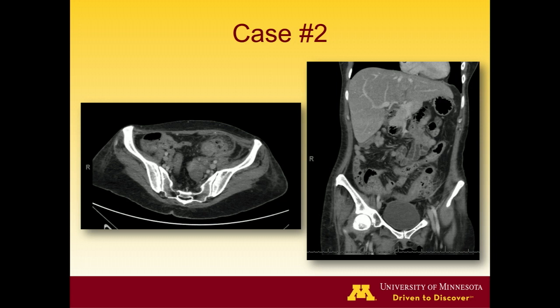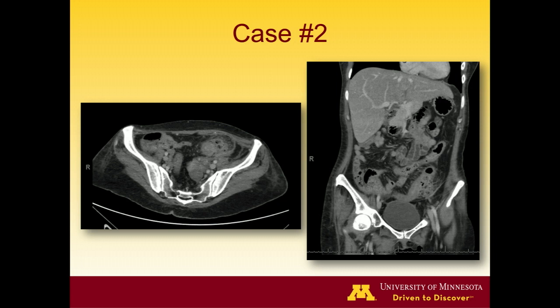Two to three weeks after starting steroids, she had a syncopal episode, presenting to the ER with elevated white count and severe malnutrition. CT scan showed left-sided dominant colitis with a phlegmon-type process in the left lower quadrant, an abscess cavity adjacent to the abdominal wall, and significant surrounding inflammation. She was treated with IV antibiotics in North Dakota for several weeks, partially improved, sent home, returned, and spent about six weeks total on antibiotics without meaningful improvement, prompting transfer to the university.